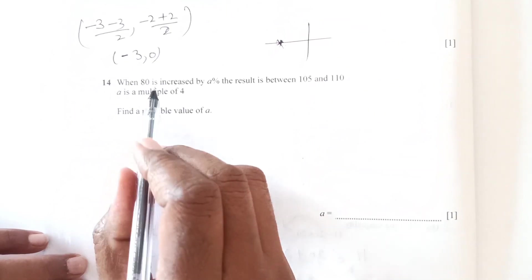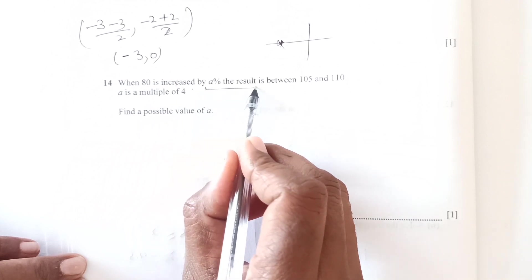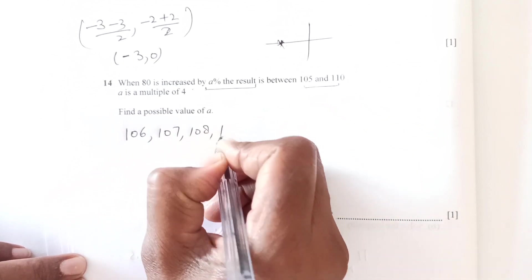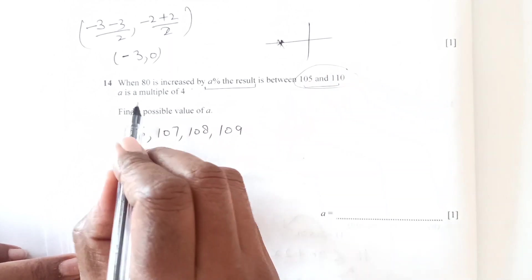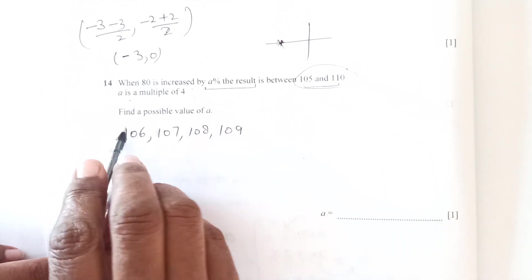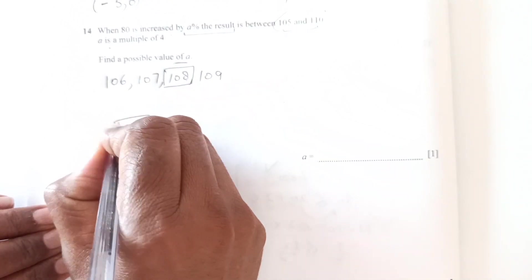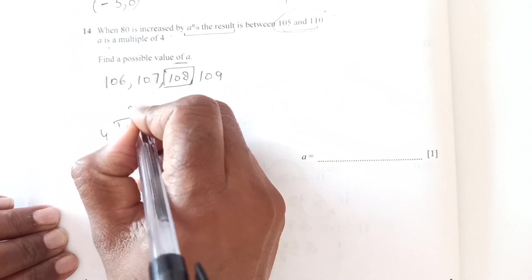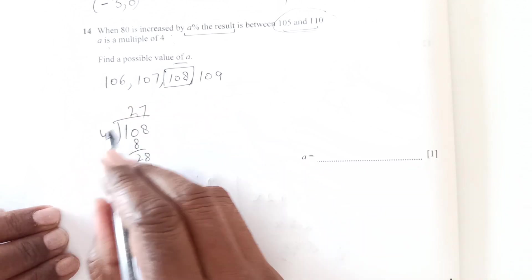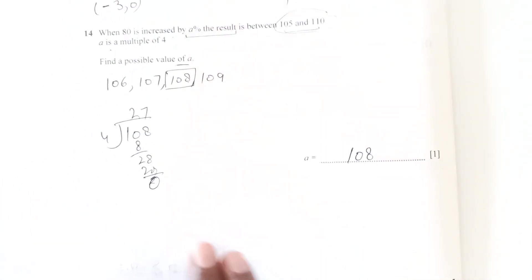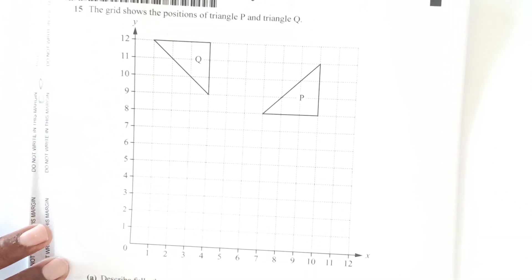Now number 14, when 80 is increased by A percent, the result is between 105 and 110. So 106, 107, 108 and 109. It is between this range. A is multiple of 4. It is multiple of 4. So only number, find the possible value of A. So only number which is multiple of 4 is 108. So you can divide 108 by 4, 4 times 2 is 8, 4 times 7 is 28. So it is divisible, what do you say, fully divisible, no remainder. So that means 108 is the possible answer for A. So you can do this question again or we will just do this in the next video. I think you guys understood everything.